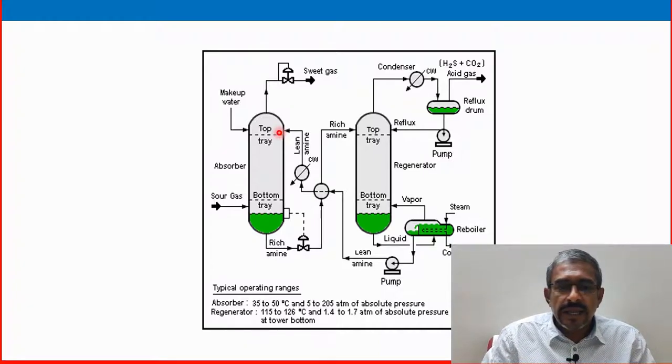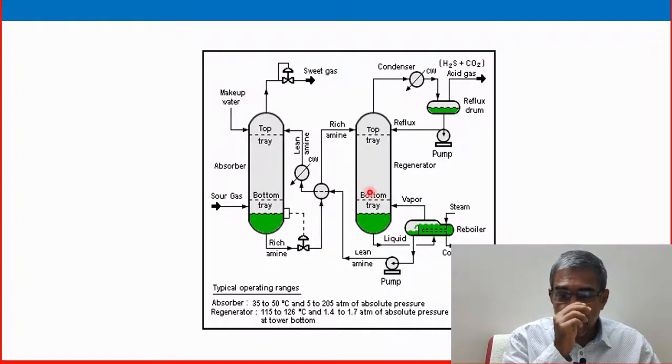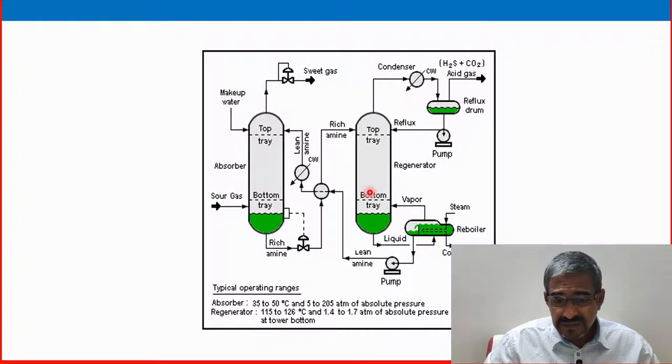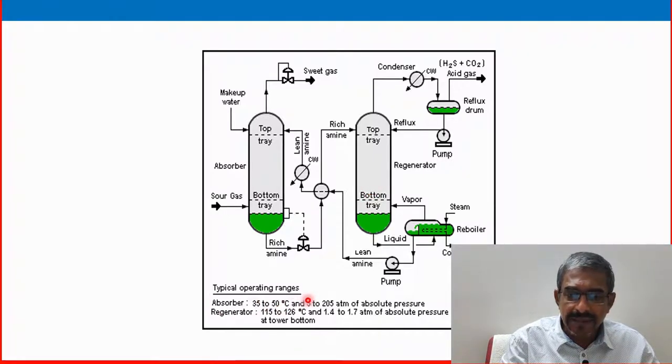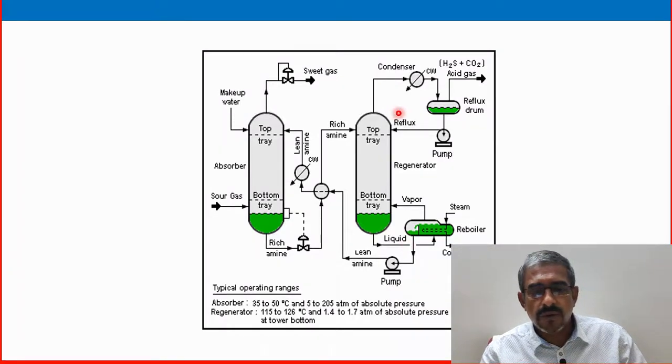In this way by reading carefully one or two times and going outside the plant, see the real physical equipment in the field. Any operator or any new person or anyone can understand a process operation properly. But here some details are not showing, basically more instrumentation and control system are not showing, but basic understandings are here. See it is written absorber 35 to 50 degrees C and 5 to 205 atmosphere absolute pressure, that is operating range of absorber, and regenerator is 115 to 126 degrees C and 1.4 to 1.7 atmospheric absolute pressure at tower bottom. Some details they are providing here.